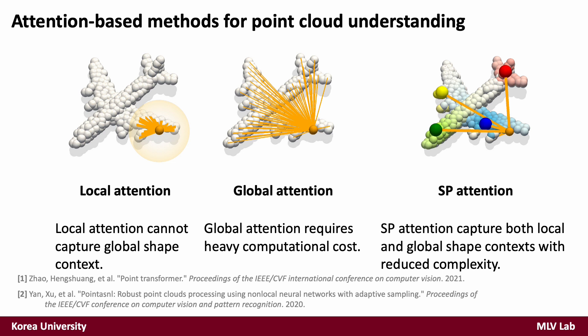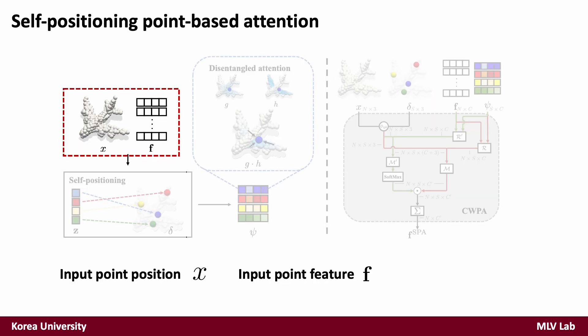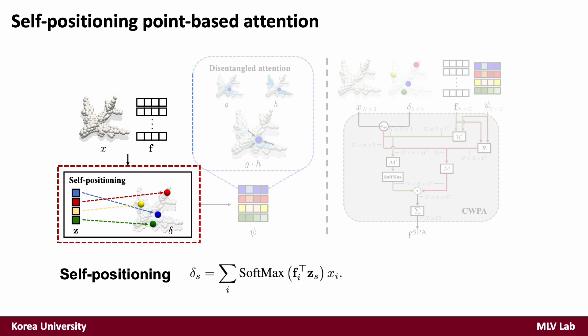In this paper, we design an SP attention that performs global attention by computing attention weights with only a small set of self-positioning points, instead of the whole input points, different from standard global attention. Given input points X and their corresponding features F, self-positioning points delta are adaptively placed through the learnable latent Z. SP points are always located nearby input points, and precisely, they stay within the convex hull of input points.